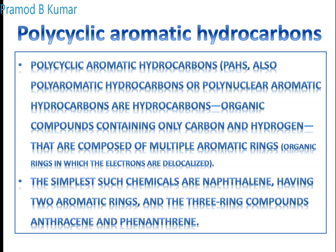The simplest example is naphthalene, which has two aromatic benzene rings fused together. If there are three rings, it is known as anthracene or phenanthrene, depending upon the mode of arrangement. So polyaromatic hydrocarbons contain carbon and hydrogen, are cyclic, and contain multiple aromatic rings where electrons are delocalized.